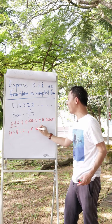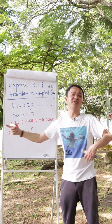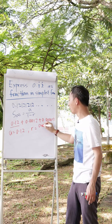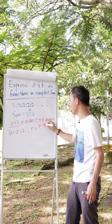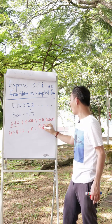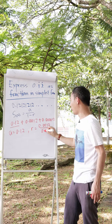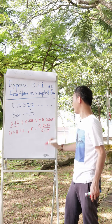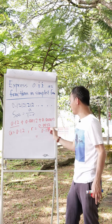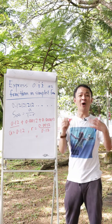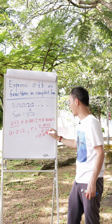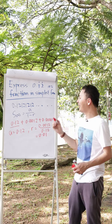I know my r is the second term divided by the first term, which is 0.0012 over 0.12. So you should be able to get 1 over 100, or 0.01.